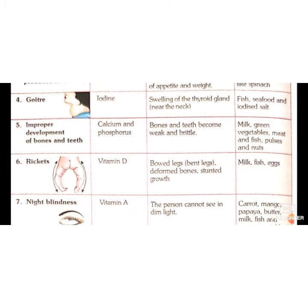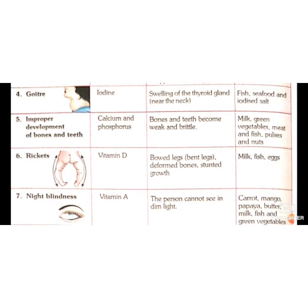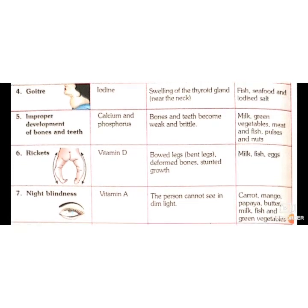Goiter is a disease in which the thyroid gland swells up, caused due to deficiency of iodine. A swelling can be seen in the neck region. It can be treated by giving fish, seafood, and iodized salt.